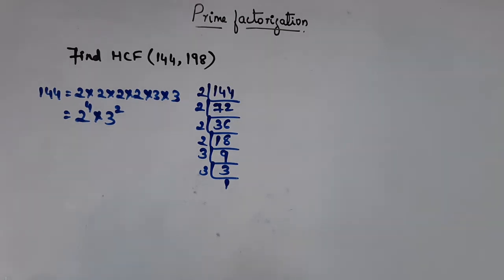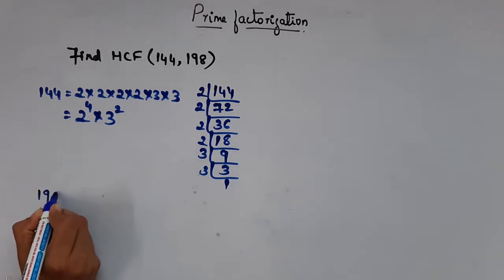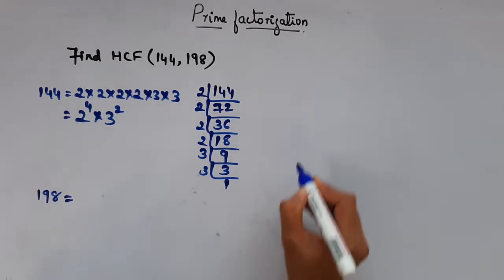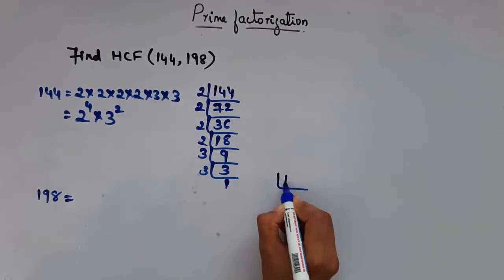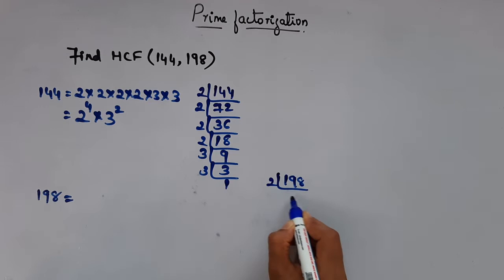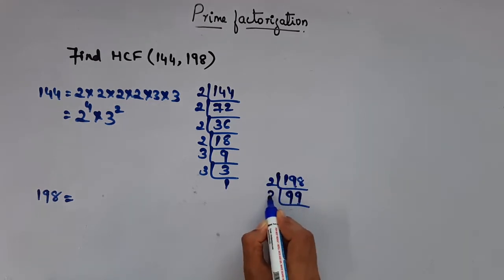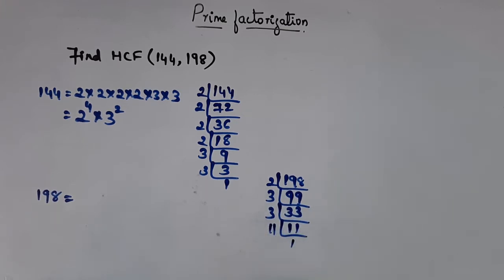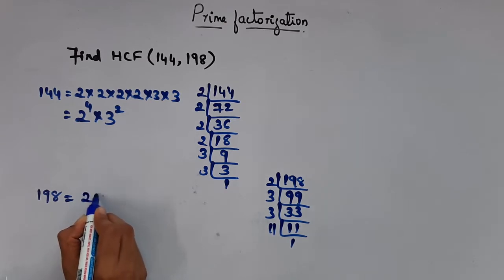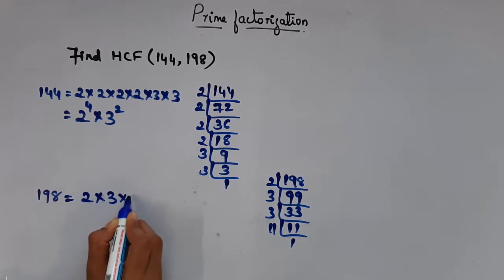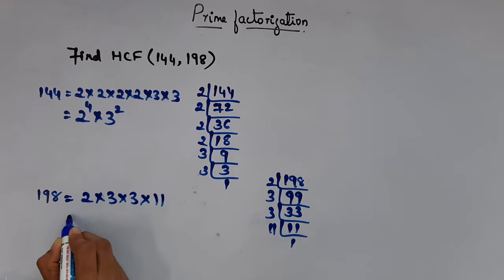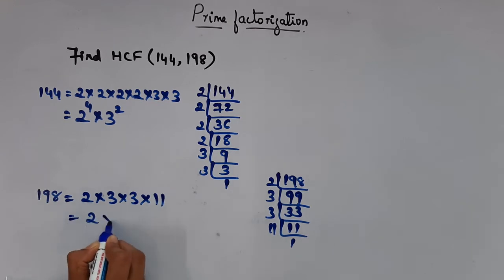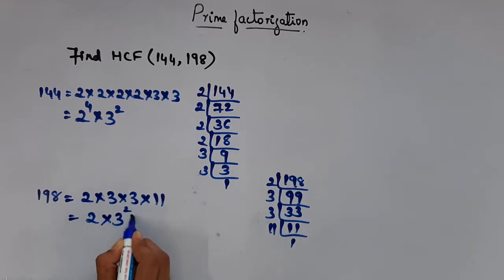Now let's find the prime factorization of 198. Dividing 198 by 2, then by 3 twice, and then by 11, we get 198 written as 2 into 3 into 3 into 11. So in terms of powers, that is 2 into 3 square into 11.